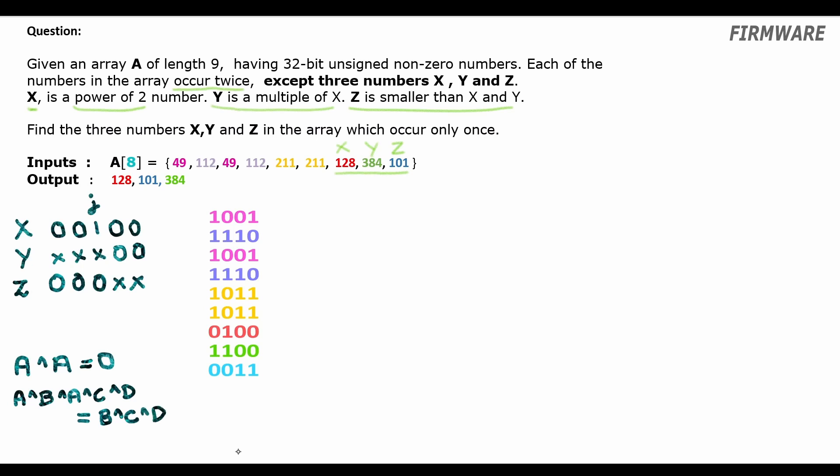Okay, now let's hit the question. Let's take a simpler example with smaller numbers. We have binary representation of nine numbers here. Nine, fourteen, eleven, twice. And we have X = four, Y = twelve and Z = three. Four is a power of two number. Twelve is a multiple of four. And three is smaller than X and Y.